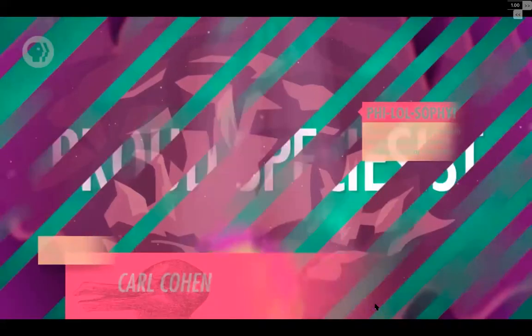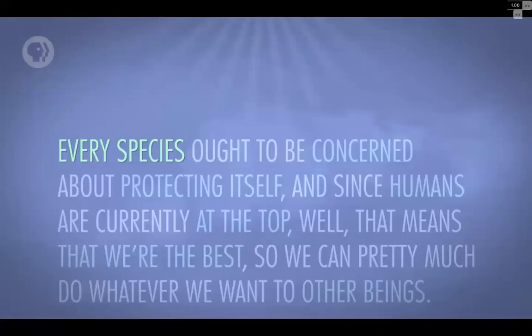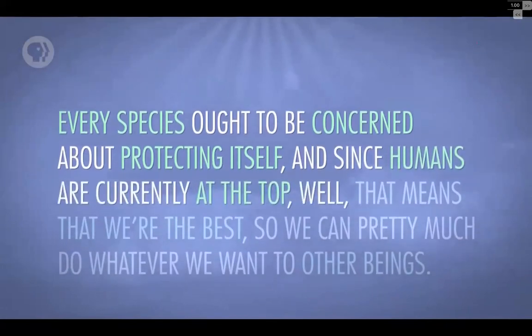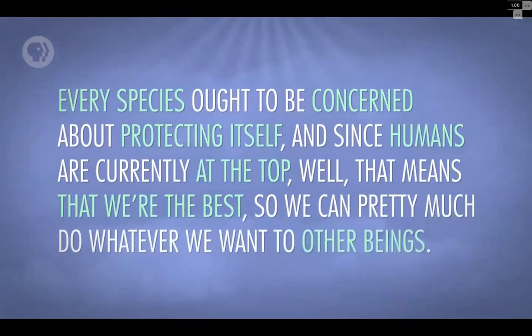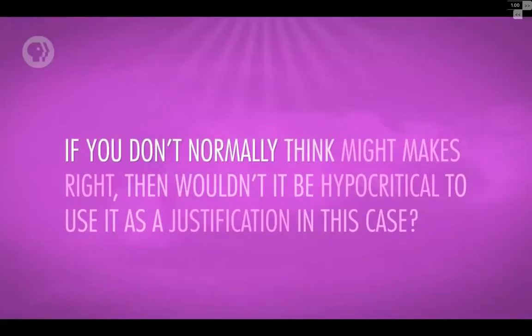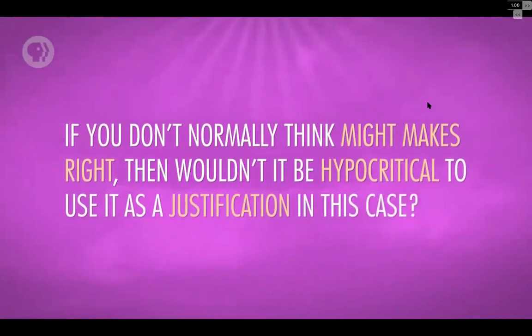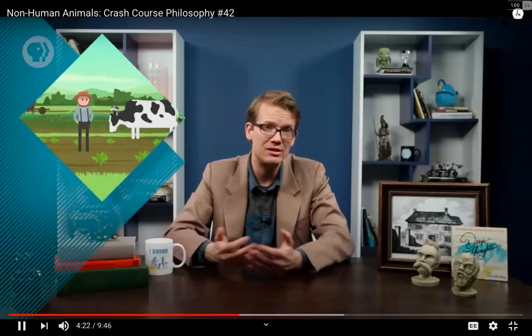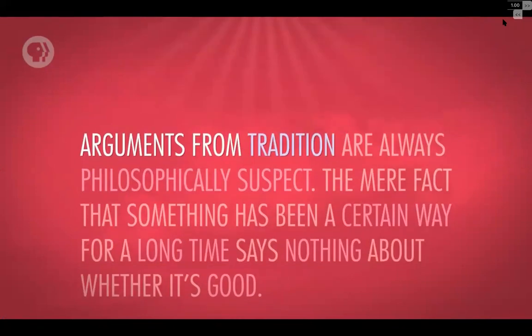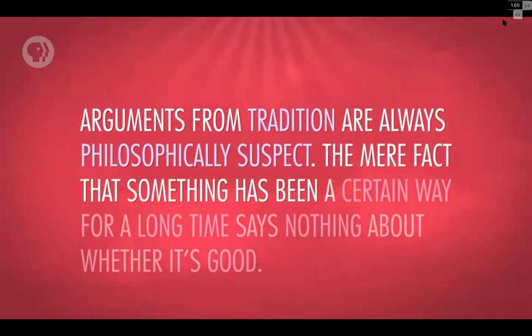Maybe you think we should treat other animals the way we do just because we can. Contemporary American philosopher Carl Cohen calls himself a proud speciesist. He argues that every species is struggling to claw its way to the top, and since humans are currently at the top, we can pretty much do whatever we want to other beings. The problem is you'd almost certainly not be okay with this reasoning if you weren't the privileged species — it's the exact argument used by slave owners. Another rationale is tradition: humans have been dominating non-human animals for a really long time. But arguments from tradition are always weak — the mere fact that something has been a certain way for a long time says nothing about whether it's good.